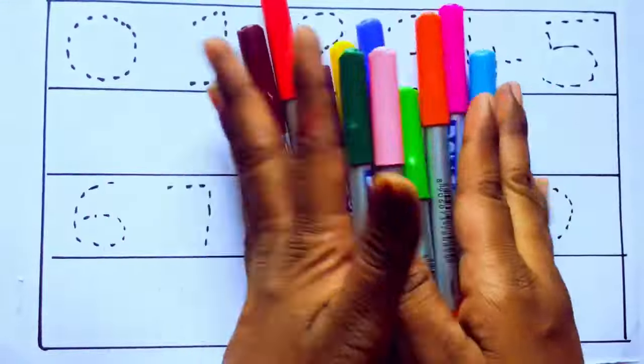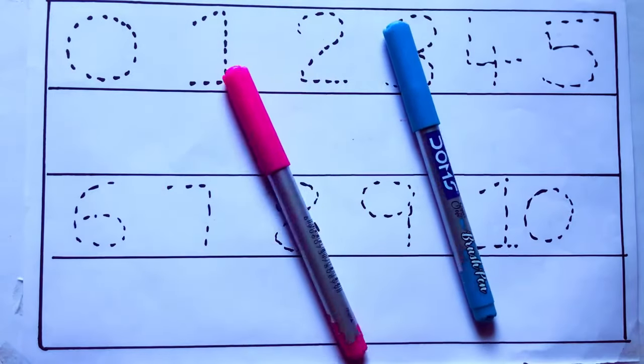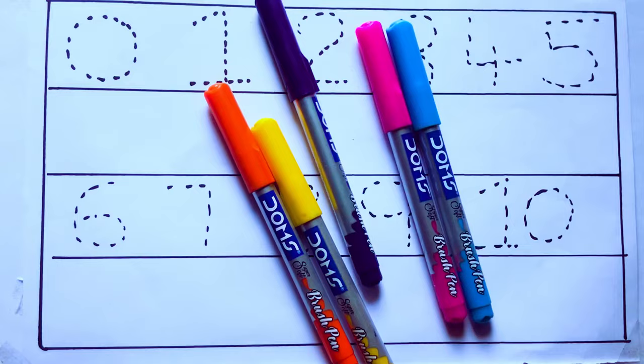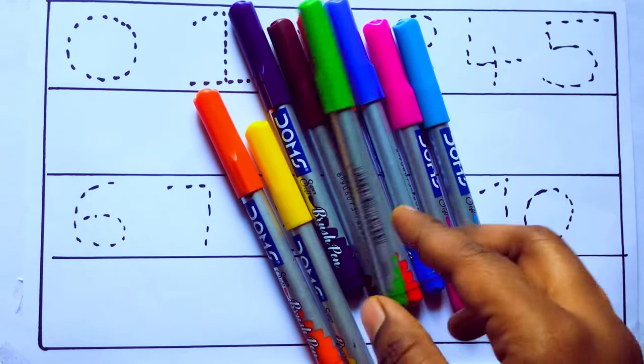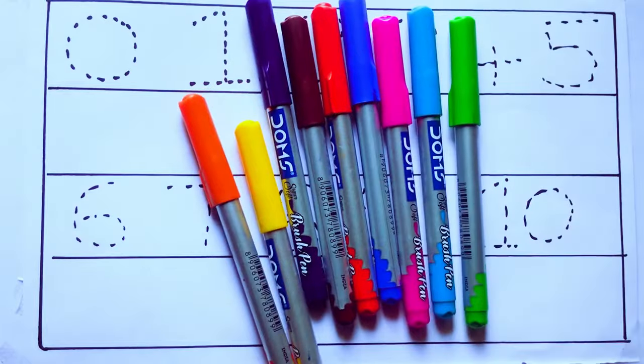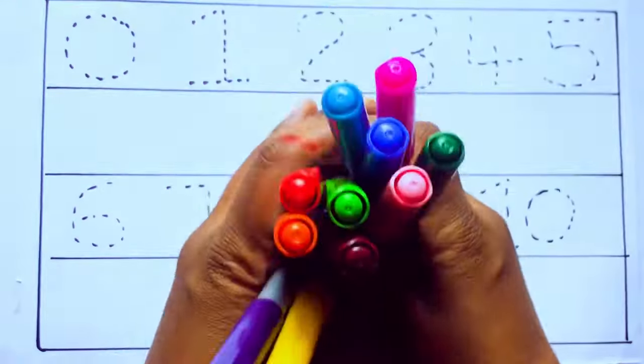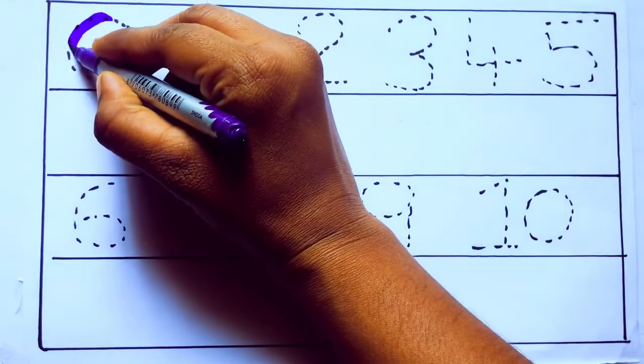Let's learn some colors. These are all the color pencils. Let's learn the names: sky blue color, pink color, yellow color, orange color, violet color, blue color, brown color, red color, green color, blue green color, and pink color. Let's draw numbers. Violet color, zero.